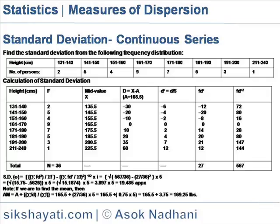The next column D' is equal to D by 5, where 5 is the scale factor. The next column shows FD', and the next column shows FD' squared. The last row shows the sum of the values, the sigma values.